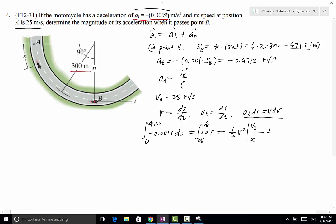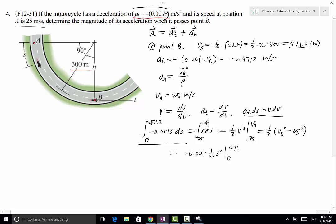So the right-hand side equals to 1/2 v_B squared minus 25 squared. The left-hand side equals to the integration of this part right here equals to -0.001 times 1/2 s squared integrated from 0 to 471.2. And that equals to -111.03.